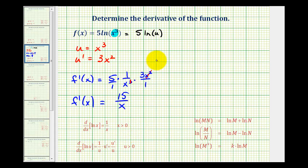I do want to show this problem one more time using a slightly different method. If we have f(x) = 5ln(x³), we could apply the power property of logarithms given here to the initial function, which means we can move this exponent of 3 to the front.